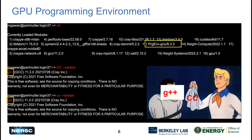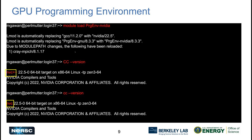For example, with the GNU programming environment loaded, using the capital CC compiler wrapper — used for C++ applications — will actually call G++ underneath. The lowercase cc wrapper calls GCC. If you want to use NVIDIA compilers, you swap to the NVIDIA environment by doing 'module load PrgEnv-nvidia', and the wrappers will then use NVC++ and NVC. The compiler wrappers are especially helpful on GPU nodes because you have to link in different runtimes.